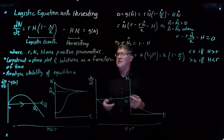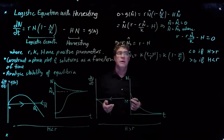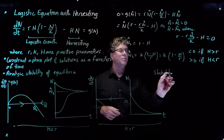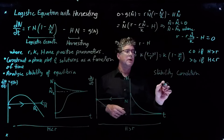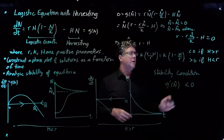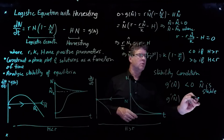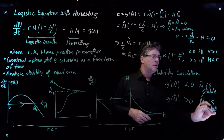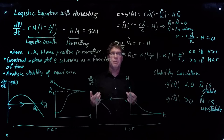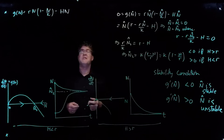So we've constructed a phase plot and drawn sample solutions as a function of time. Let's now talk about stability of the equilibria and recall the stability condition. We need to evaluate g-prime of n-hat: if it's less than zero, n-hat is stable; if g-prime of n-hat is greater than zero, n-hat is unstable. We'll plug in the values of n-hat already calculated.